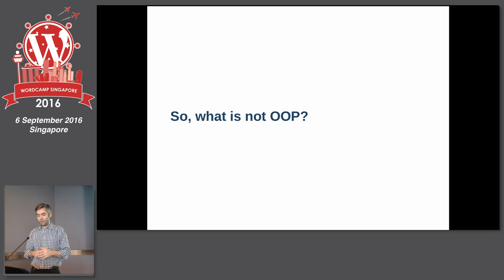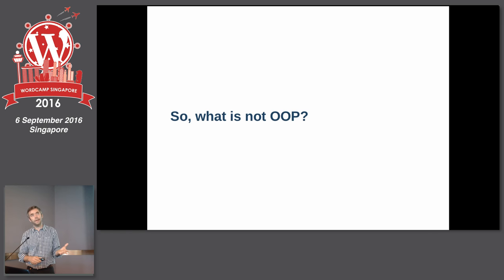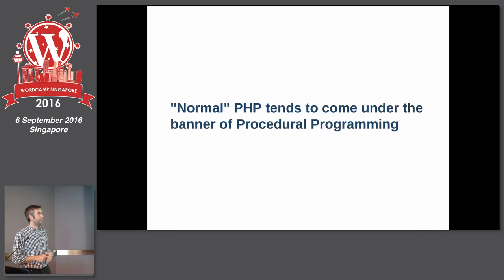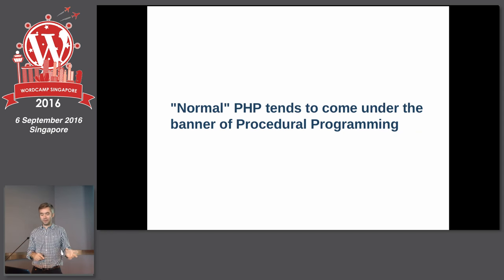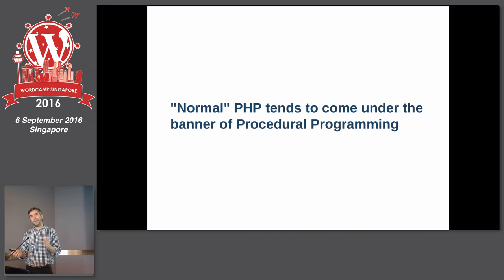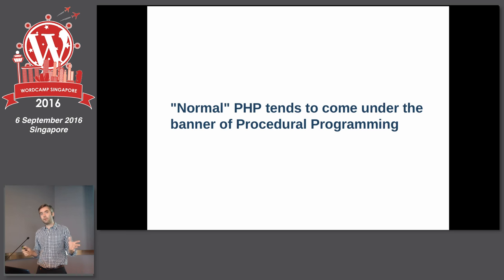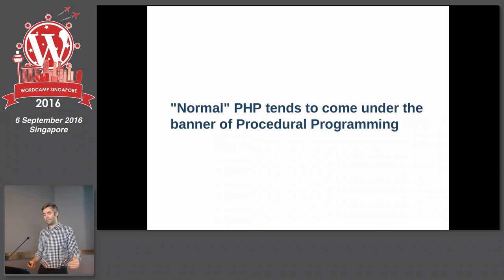Before I get into code examples, I'm going to explain what is not object-oriented programming. PHP started out as a basic language for templating and having variable content on a page. Normal PHP — what I still think of as not object-oriented — tends to come under the banner of procedural programming. Procedural programming is broadly just writing code in the way that a machine is going to interpret it, in the same order as what the website or plugin is going to do with it.